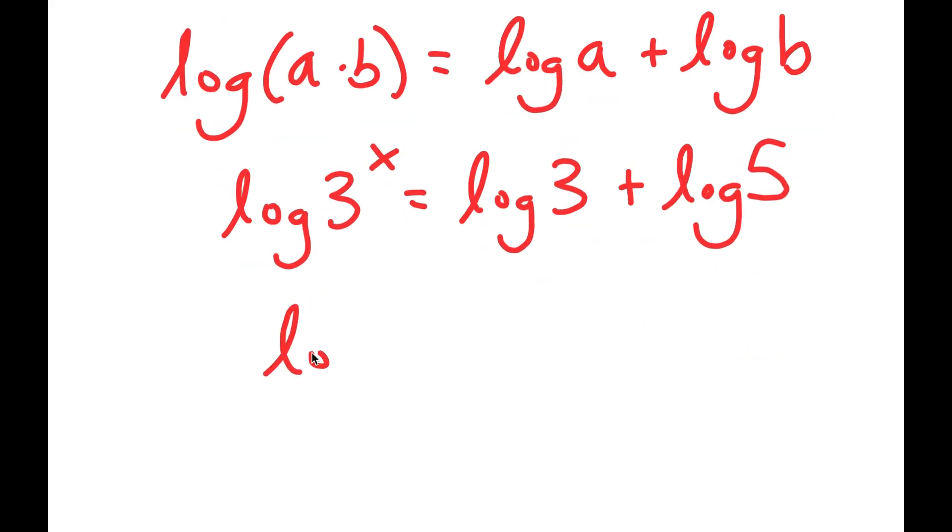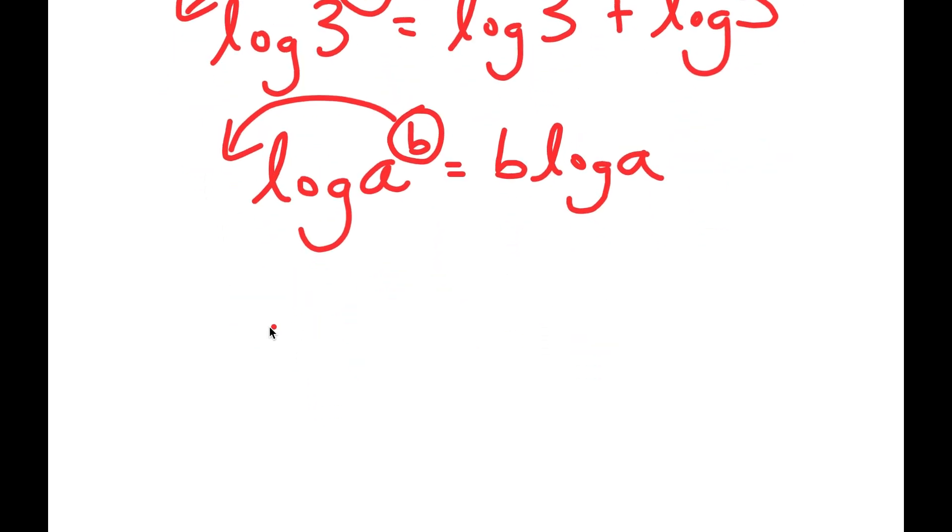And if I have something of the form log a to the power of b, I can move b to the front, so I get b times log a. So log 3 to the power of x, I can move this to the front, and I get x times log 3 is equal to log 3 plus log 5.